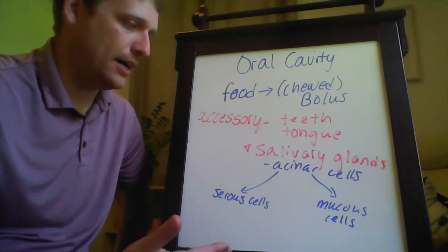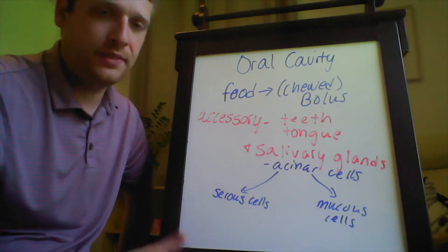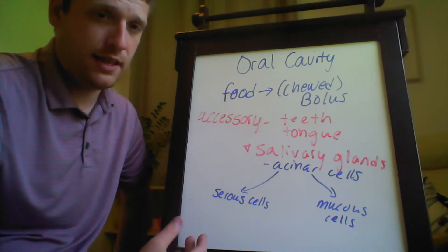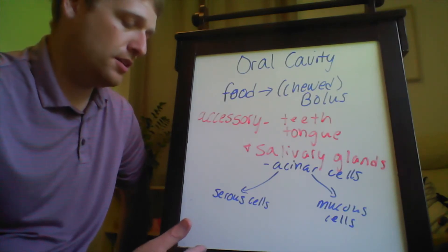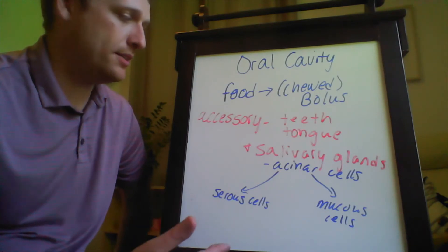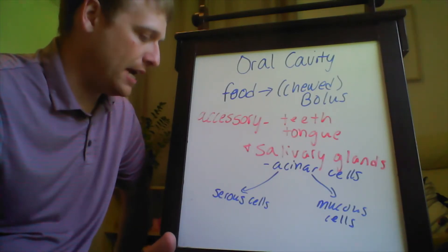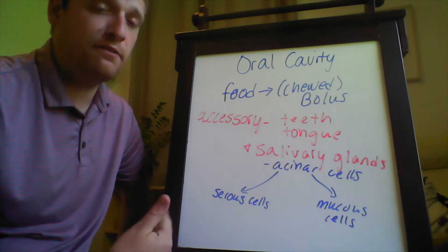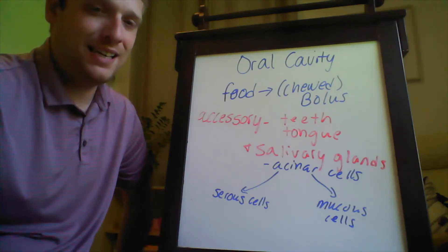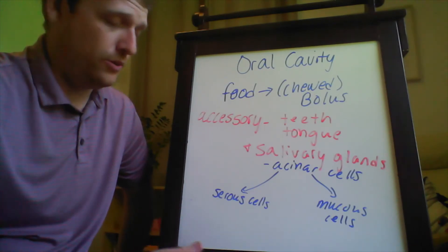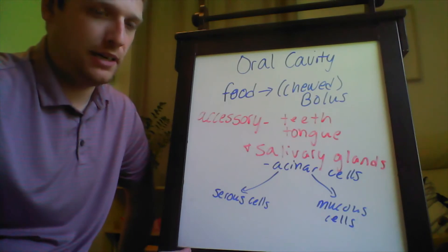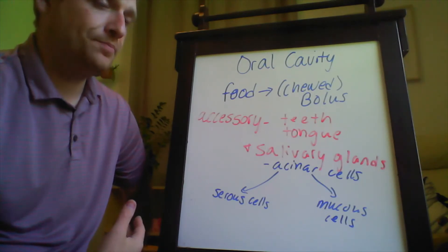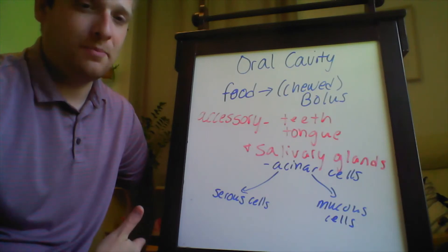Of the acinar cells, there are two types. One is the mucus cell, whose purpose is to produce mucus that keeps the mucosa of the oral cavity moist and offers some protection by trapping pathogens. You also have serous cells, which secrete fluid containing enzymes as well as other solutes like bicarbonate ions. These serous cells release substances that assist in chemical digestion.